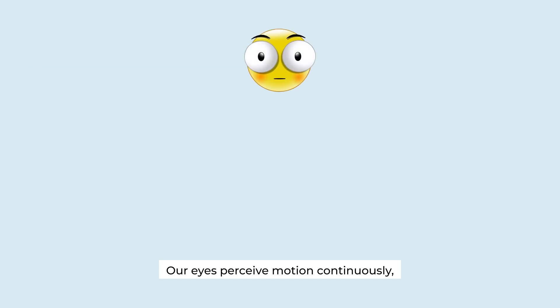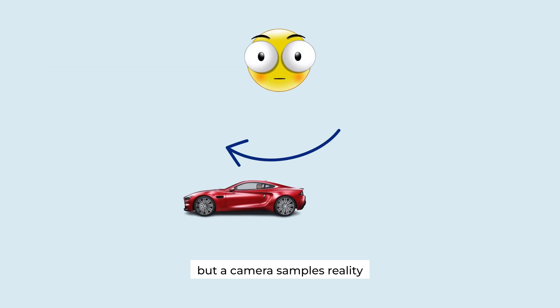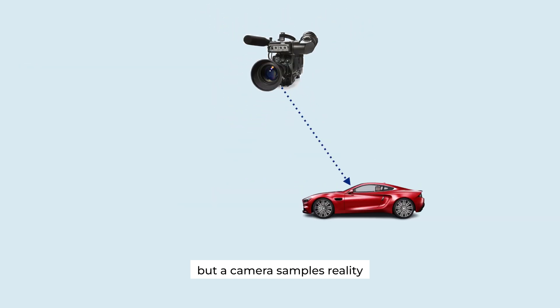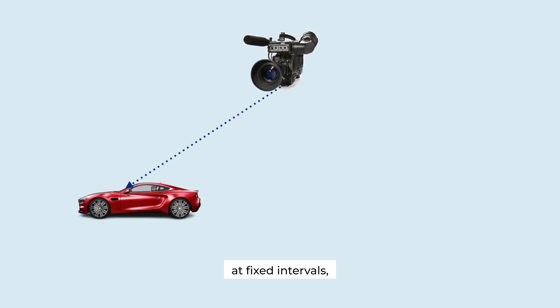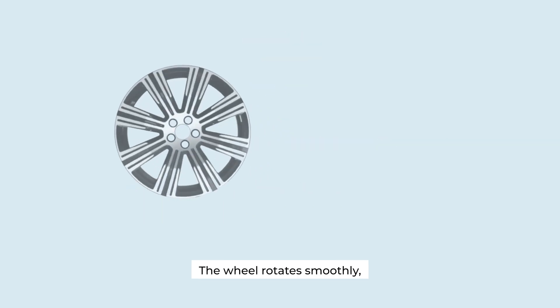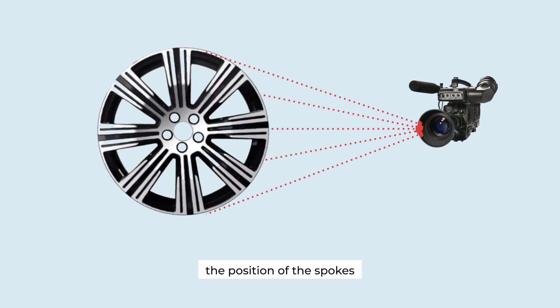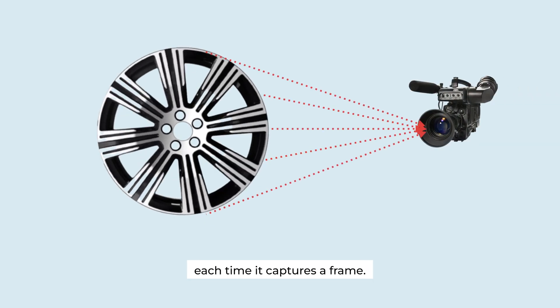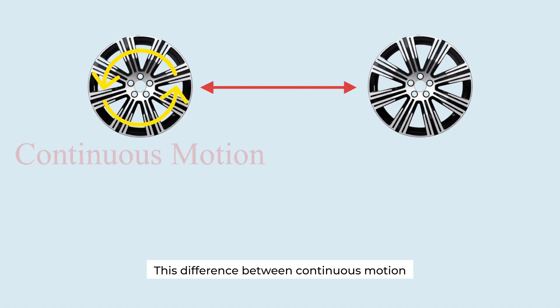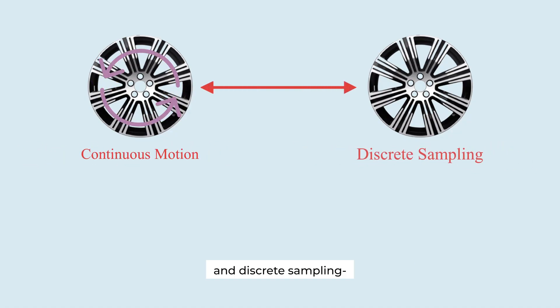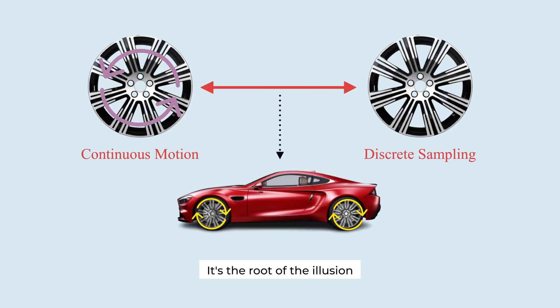Our eyes perceive motion continuously, but a camera samples reality at fixed intervals, 30 to 60 frames per second. The wheel rotates smoothly, but the camera only records the position of the spokes each time it captures a frame. This difference between continuous motion and discrete sampling is the root of the illusion, known as the wagon wheel effect.